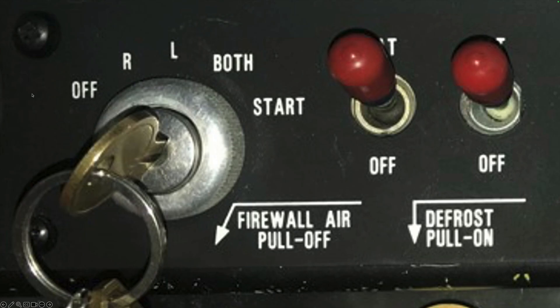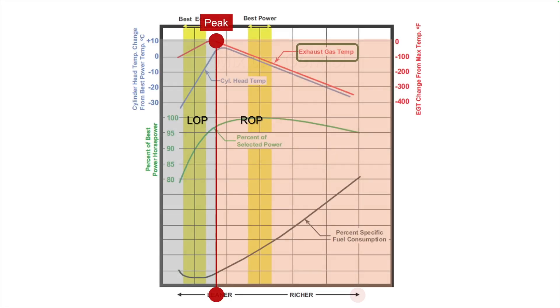Some ignition anomalies are more obvious at higher operating temperatures. To detect anomalies and catch potential failures sooner, occasionally perform an in-flight magneto check at moderate to cruise power. Some issues become more apparent at lean-of-peak mixture settings. When lean-of-peak, small changes in combustion cause larger variations in power output, so anomalies stand out. If your airplane runs well lean-of-peak and you're comfortable with those operations, use a lean-of-peak mixture setting for your in-flight magneto check.